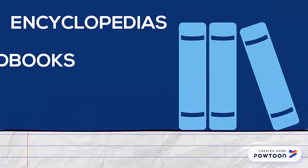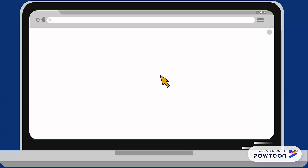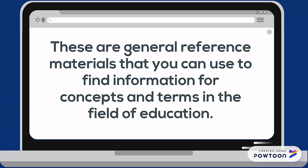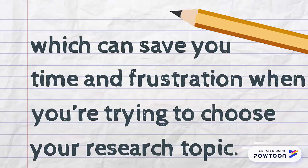Education encyclopedias, handbooks, and dictionaries. These are general reference materials and guides that you can use to find information and definitions for theories, concepts, and terms either for the field of education as a whole or for a subtopic in the field of education. These are essentially books full of education-related topics, which can save you a lot of time and frustration when you're trying to figure out your research topic or question.